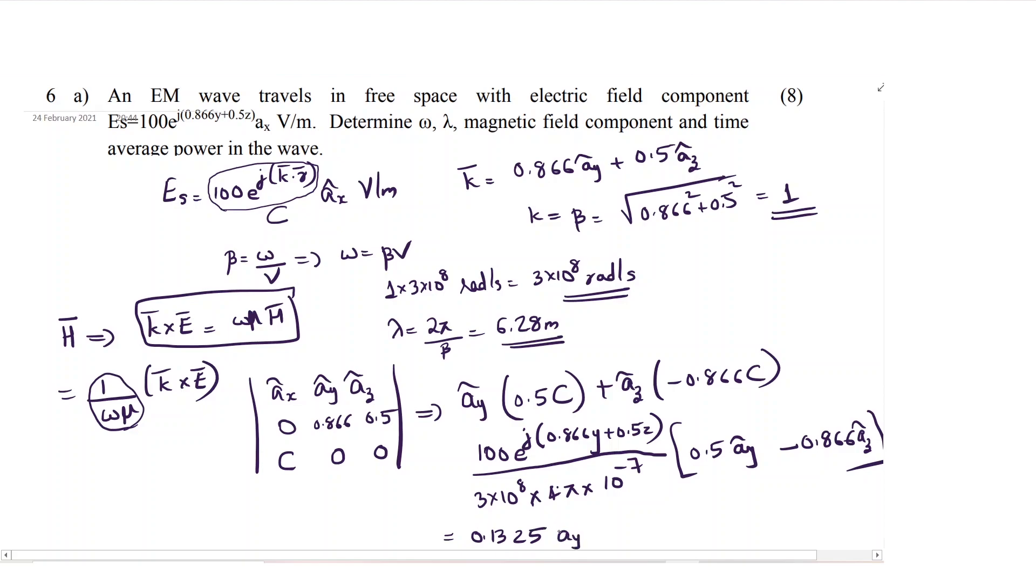This is how you calculate h and you will be getting the final answer as 0.1325 into ay minus 0.2295 into az h.